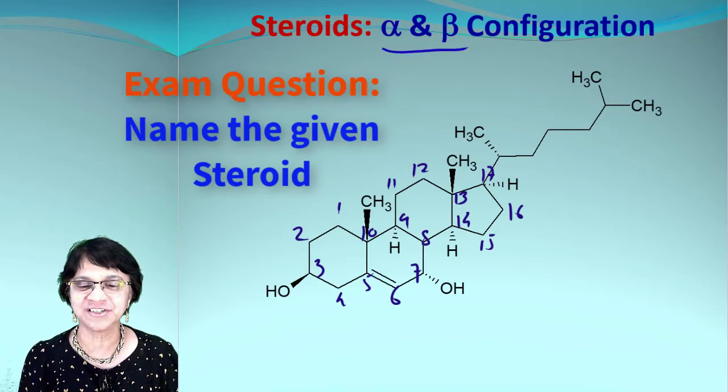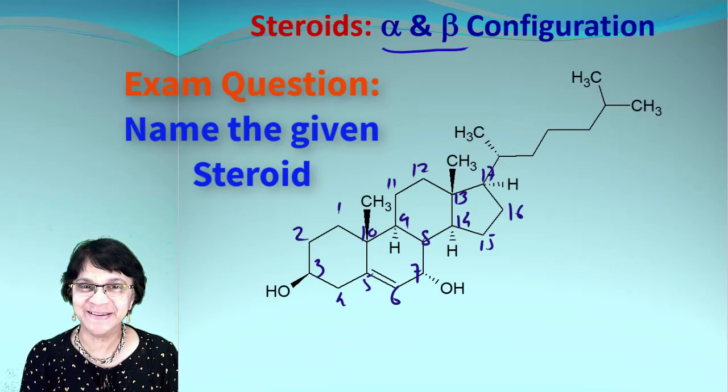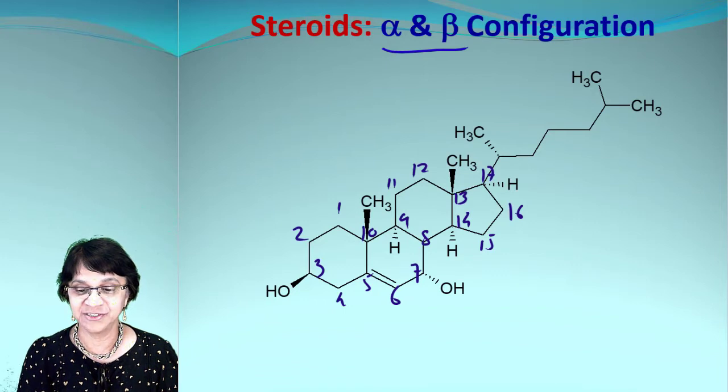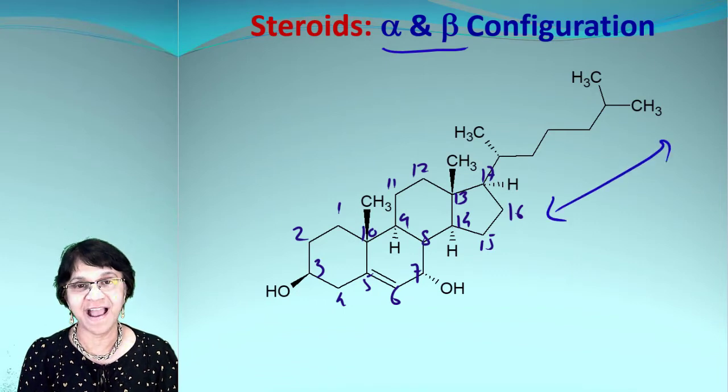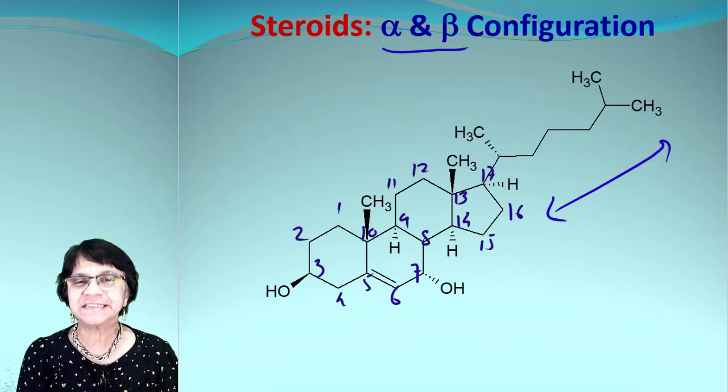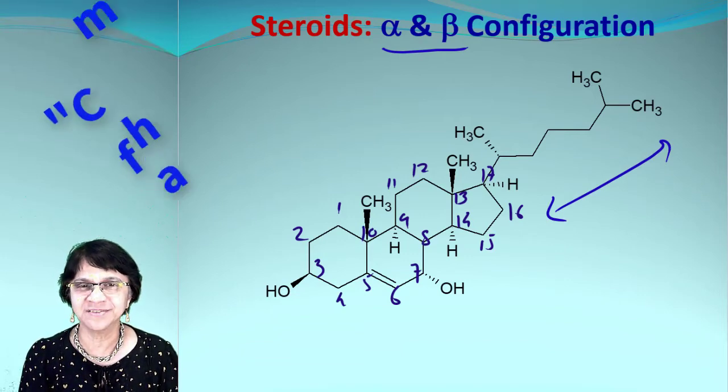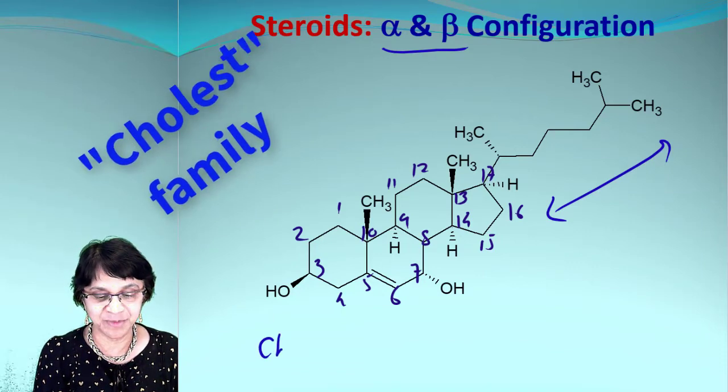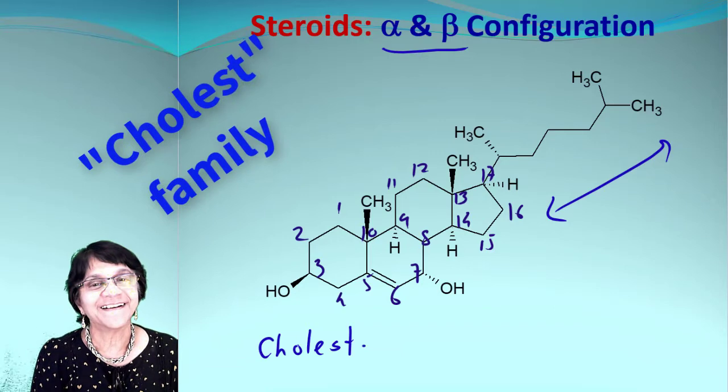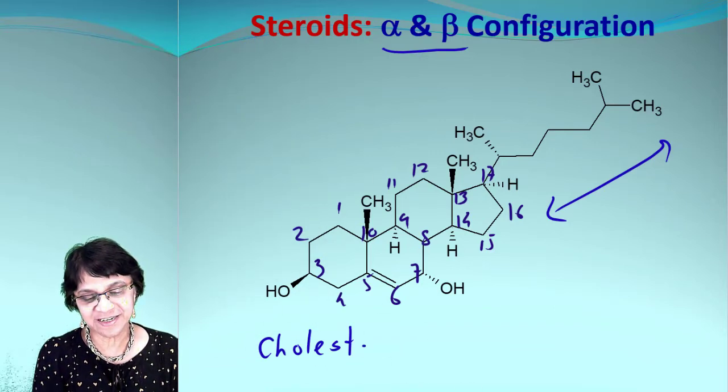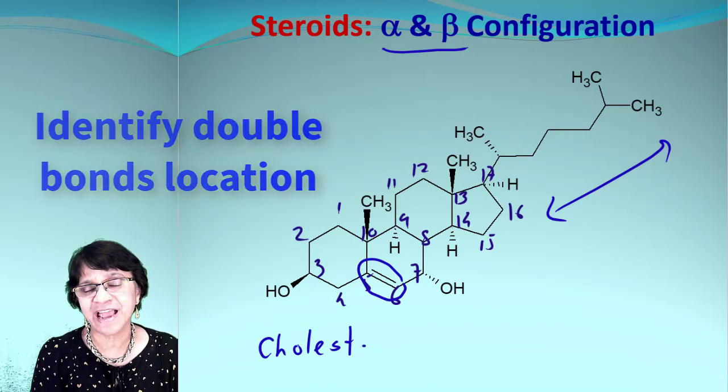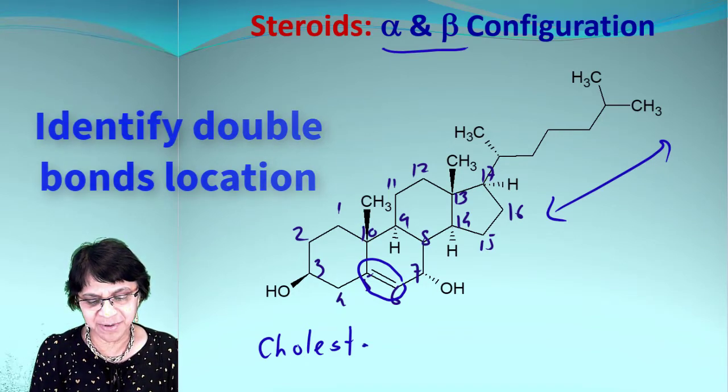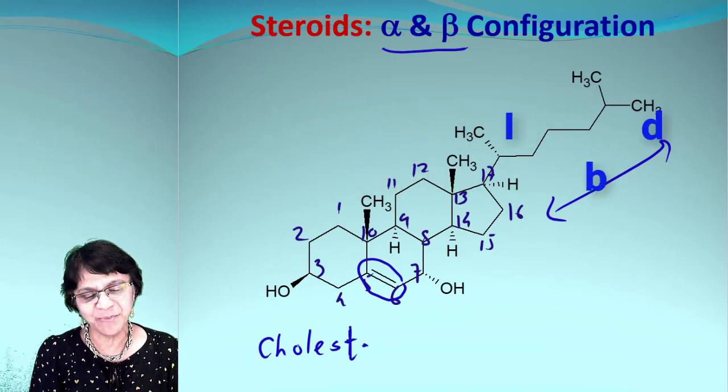So can you number and name any given steroid? Let's get started with this one. As you see, this one has this long branch attached. That means it must be a derivative of cholesterol, so we can begin with the parent name which will be 'cholest.' We also see there is a double bond. Now these derivatives may or may not have double bond at the same place, and some groups could be different. So when I'm numbering and labeling, I'm going to make sure that I write down the double bond position.